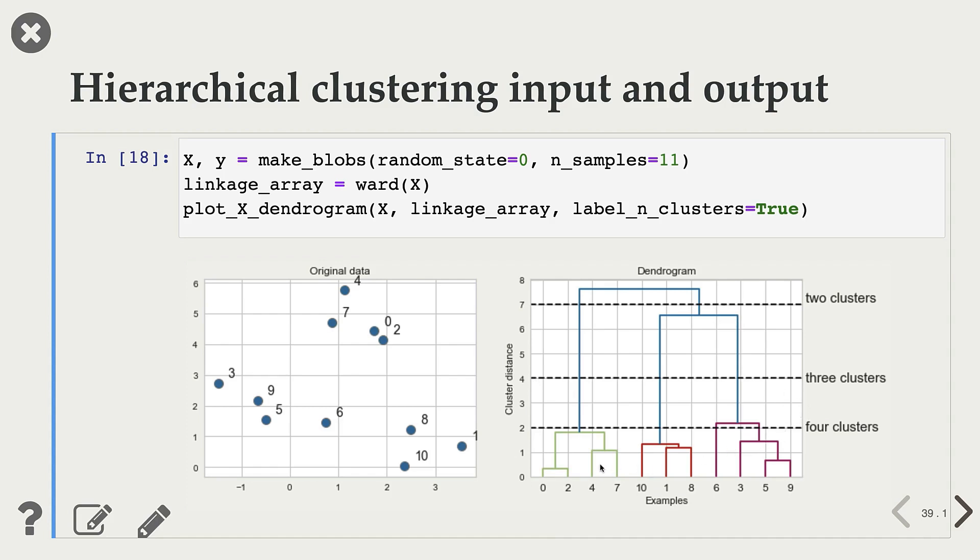If we cut it at this threshold of 2, then we will have four clusters, this small one, this 3, 5, 9, then this one, this one, and this one. So at this point, we will have these four clusters.